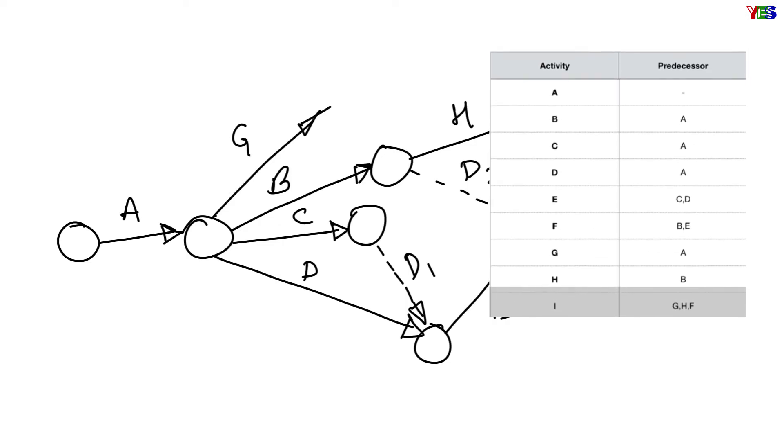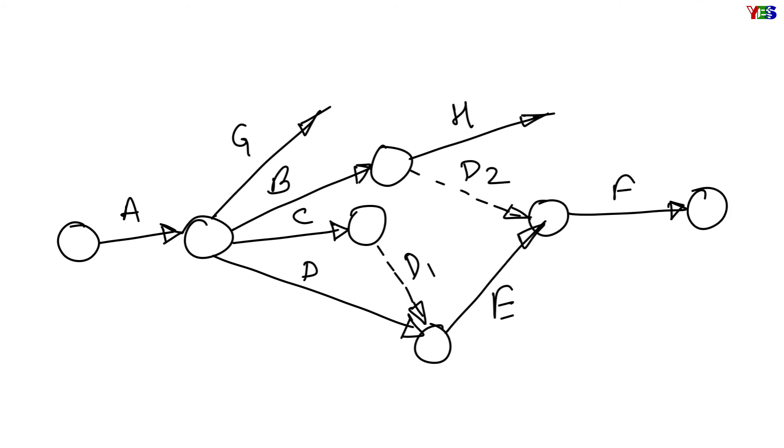And the last activity I we are having here, which has G, H, and F all three as predecessors, so it is clear that activity G, H, and F will have the same head event, and we can make it since they all are having different tail events.